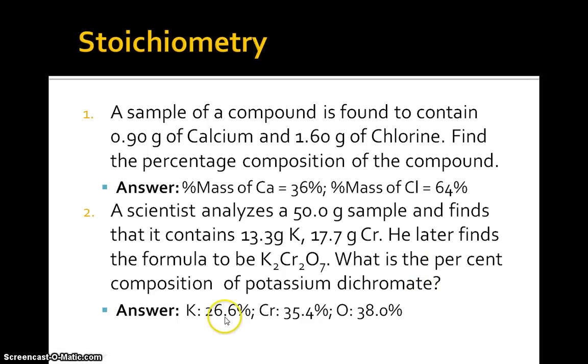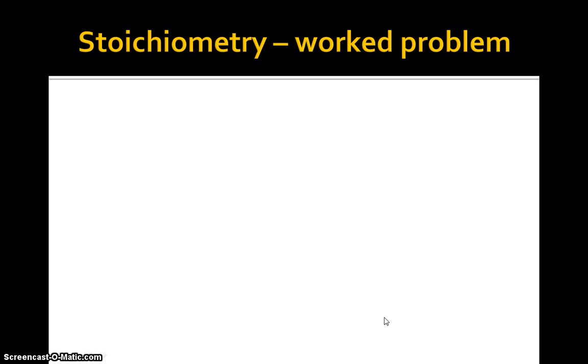Well, I came up with 26.6% potassium, 35.4% chromium, and 38% oxygen. So let's do one worked problem for those of you who need to be taken through a little more slowly. To be honest with you, you have to be okay at this or at least be able to follow a grade 12 level problem, which of course assumes you know this already.